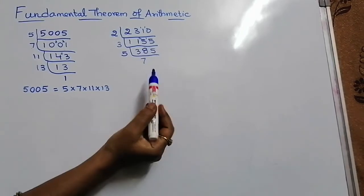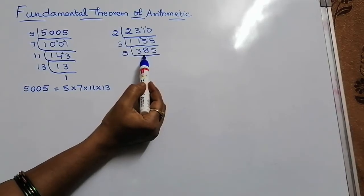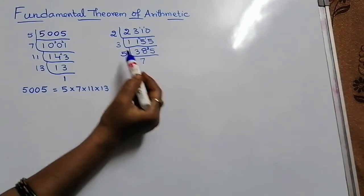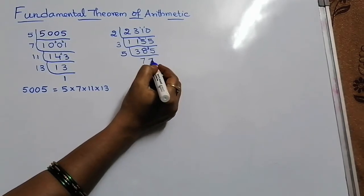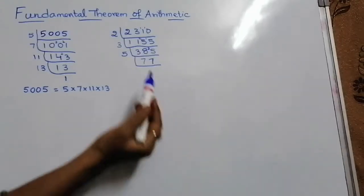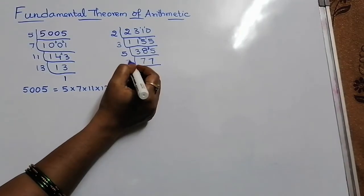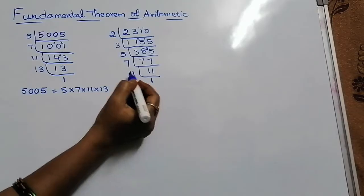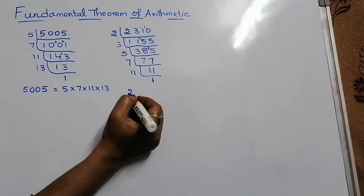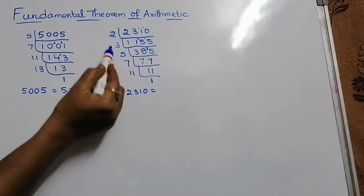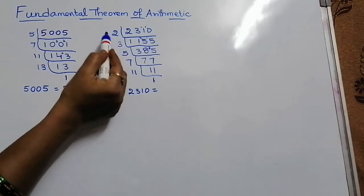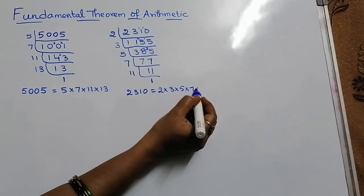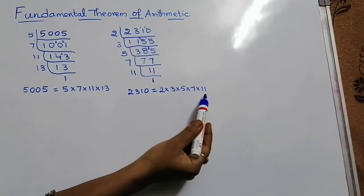Here 77 is there. Take 7 — 7 elevens are 77. 11 is a prime number, take 11 — 11 ones are 11. Now, 2310 can be written as the product of these prime factors: that is 2 into 3 into 5 into 7 into 11. This is called prime factorization for this number.